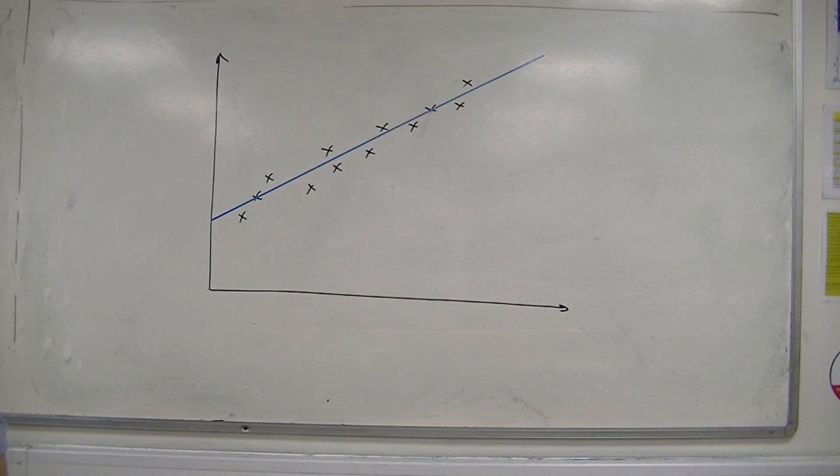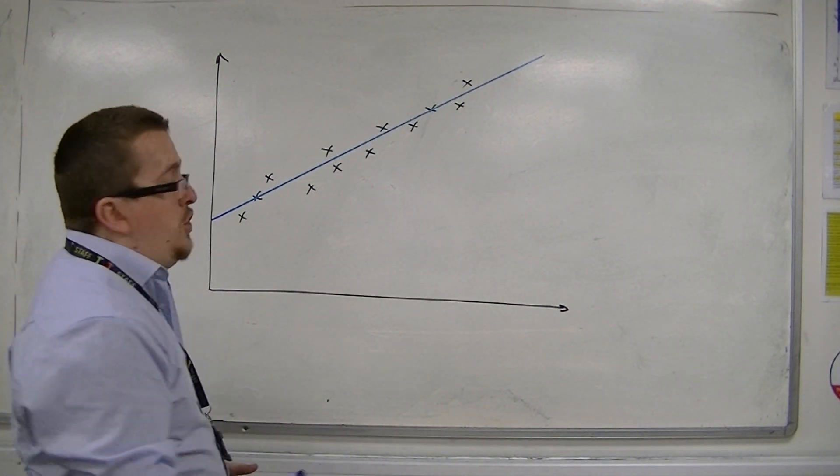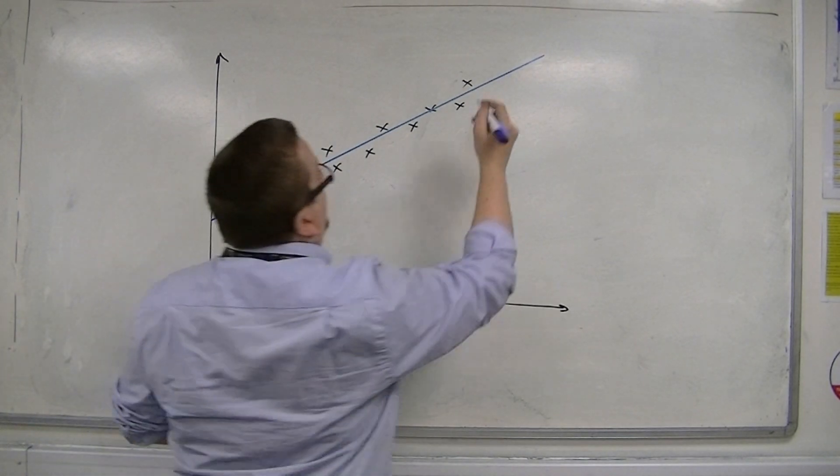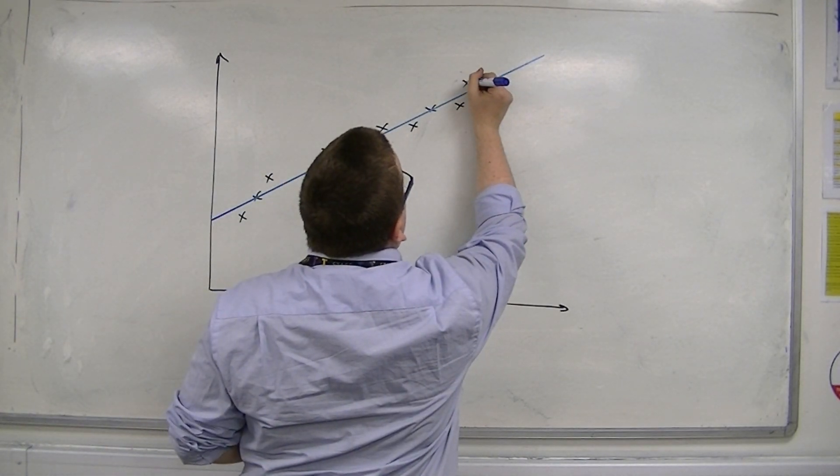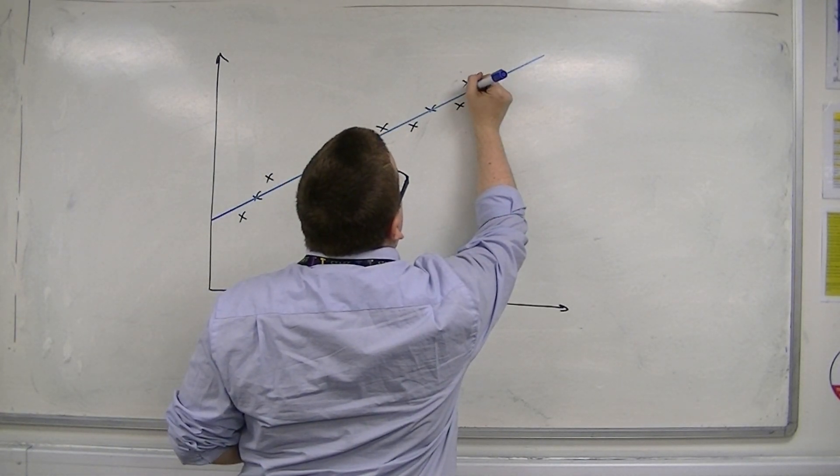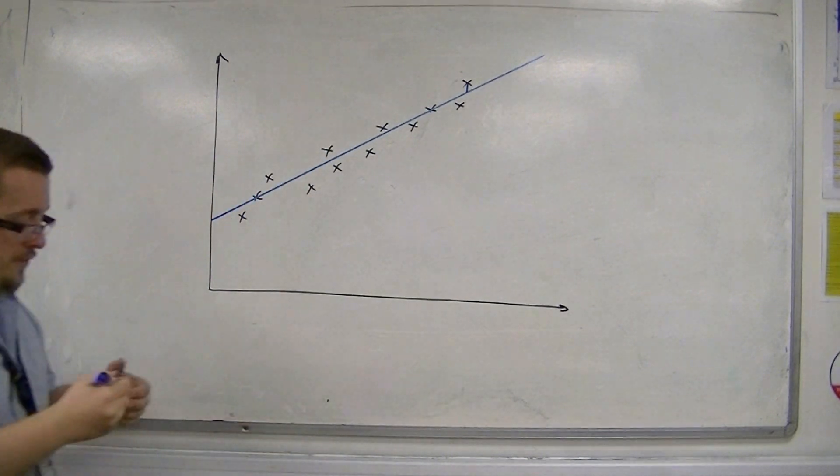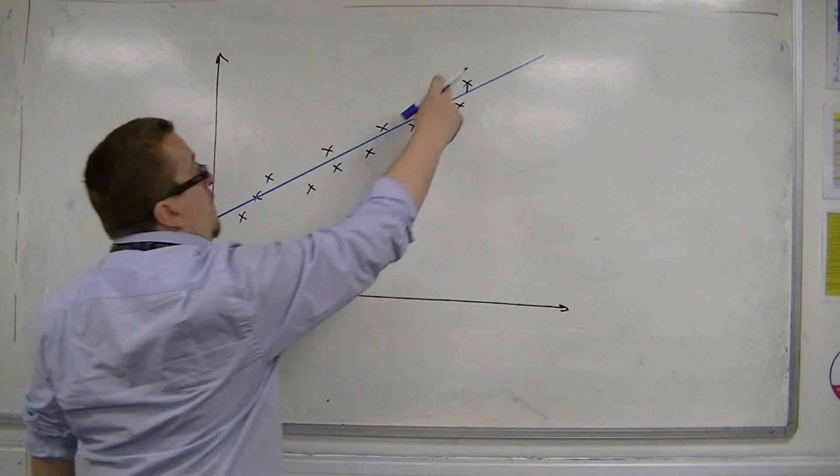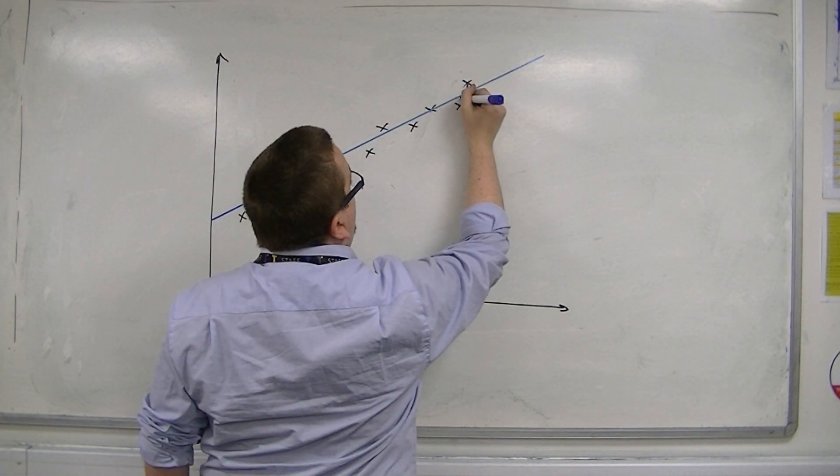So now, the residuals are the distances between each of your points and your line. So the vertical distance from the point to the line in question.